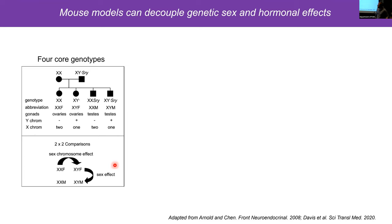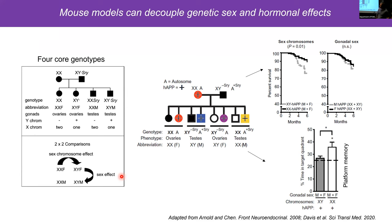One recent study using these four-core genotypes is from Dina DuBal's lab using a mouse model of Alzheimer's disease. She showed that AD mice with two X chromosomes, regardless of their biological sex, had longer lifespans in the AD model and always performed better on cognitive tests compared to those with one X chromosome.